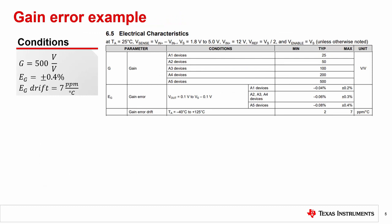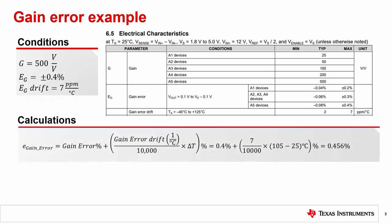Let's work an example. We plan on our device operating in an environment with a max of 105 degrees C, and we need a 500 volt per volt gain. So we decided to use the following device. From the electrical characteristics table, we see that the gain error at 25C is plus or minus 0.4%, and we see that the max gain error drift is 7 ppm per degree C. If we plug our operating conditions and the device specifications into the gain error equation, we get 0.456%.